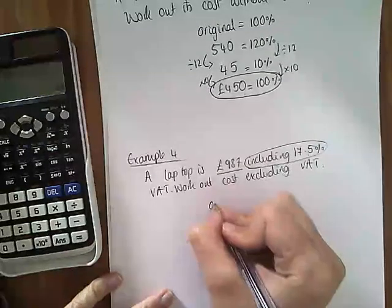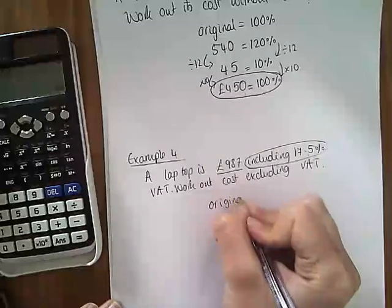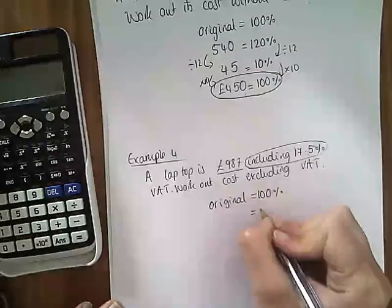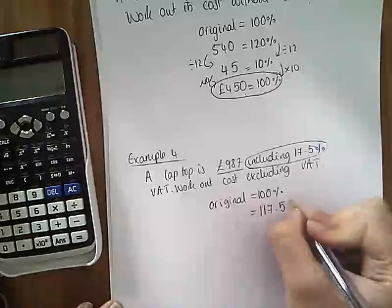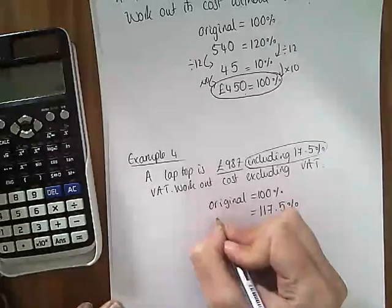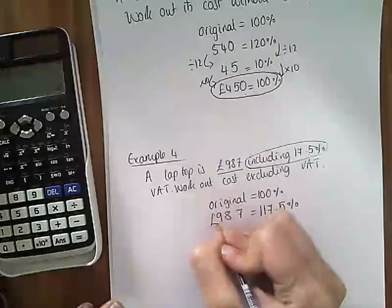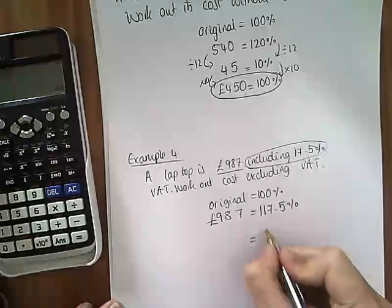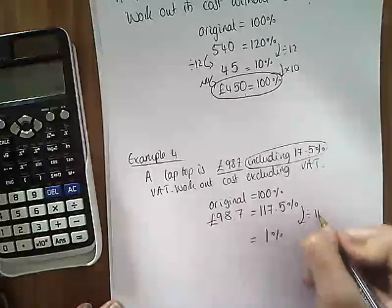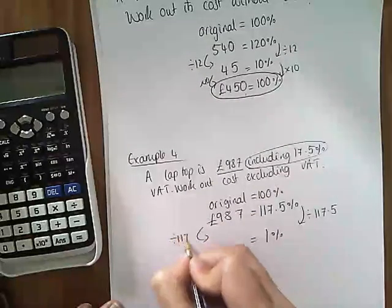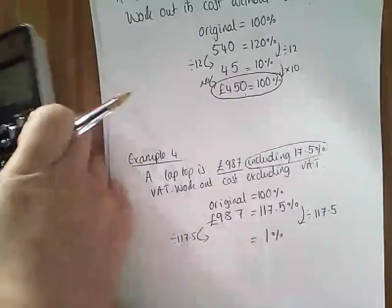Okay. So, again, the original is at 100%. If we've added 17.5% to it, we are left with 117.5%. So, £987 is worth 117.5%. Easiest, probably, to find 1% here. So, we're going to divide by 117.5% to find 1%.